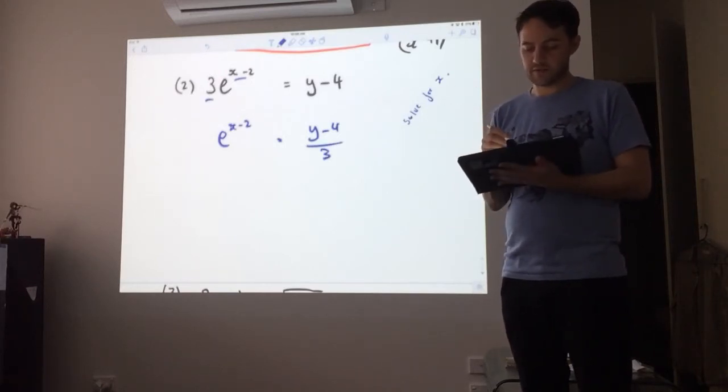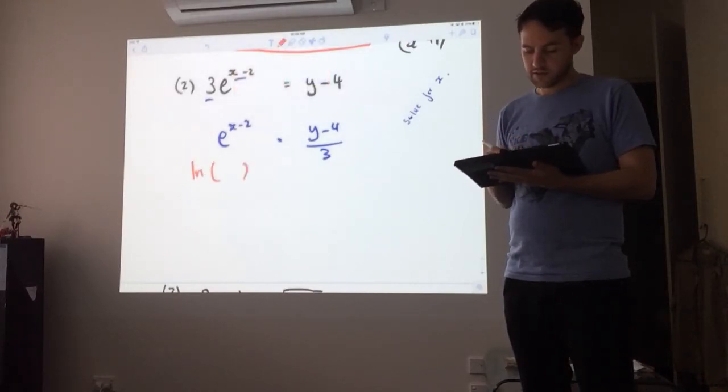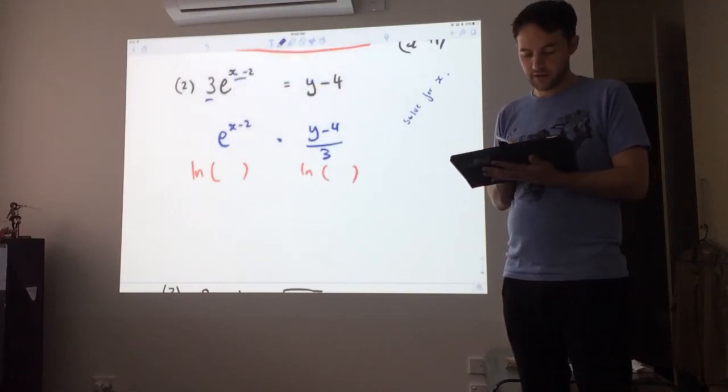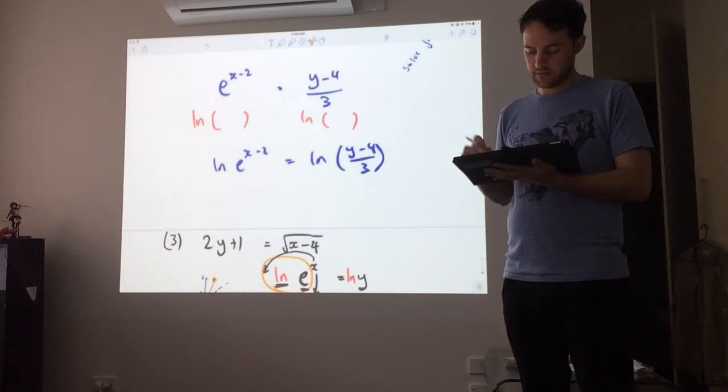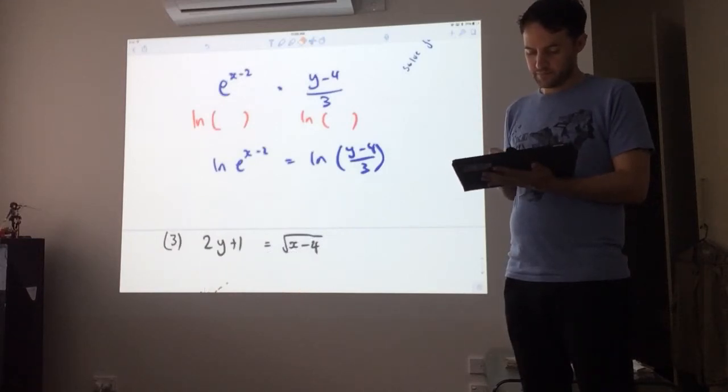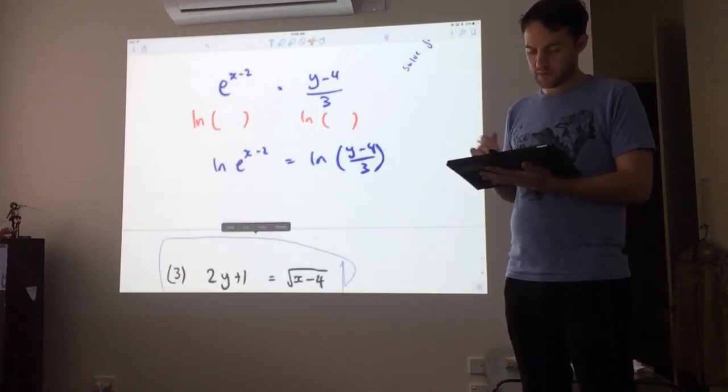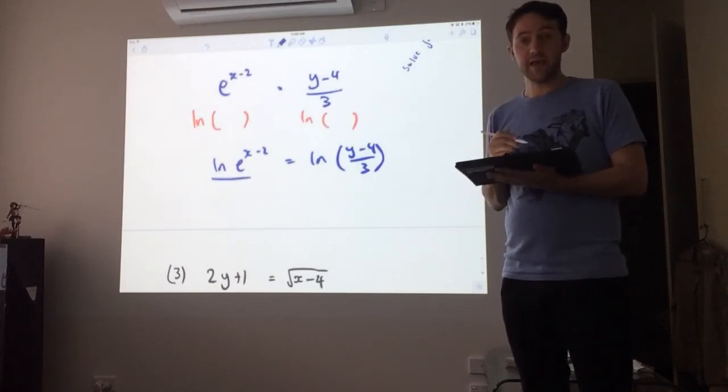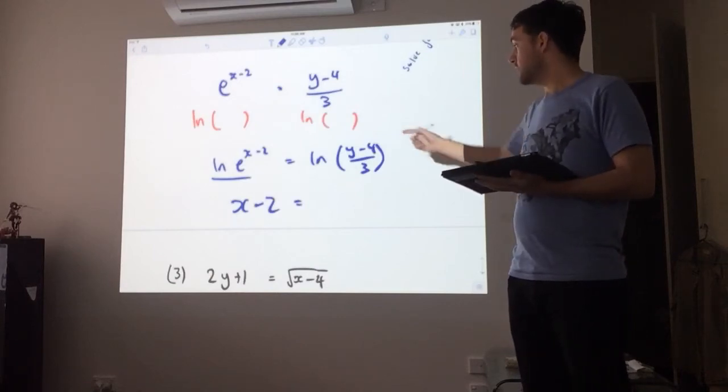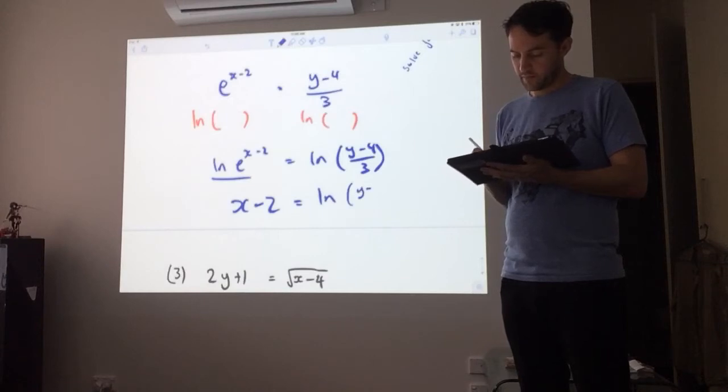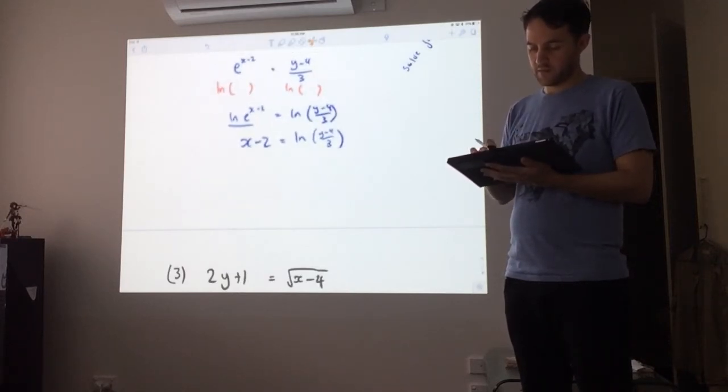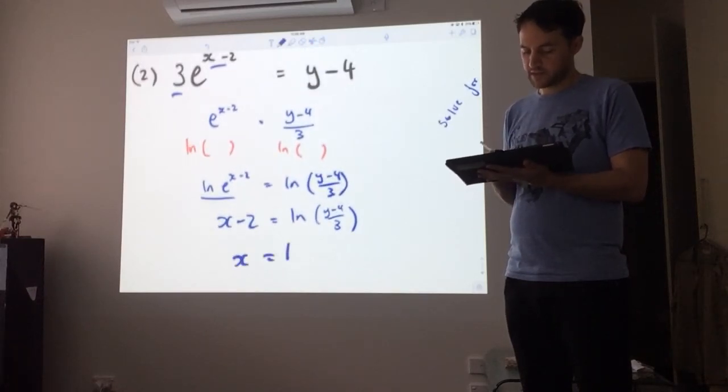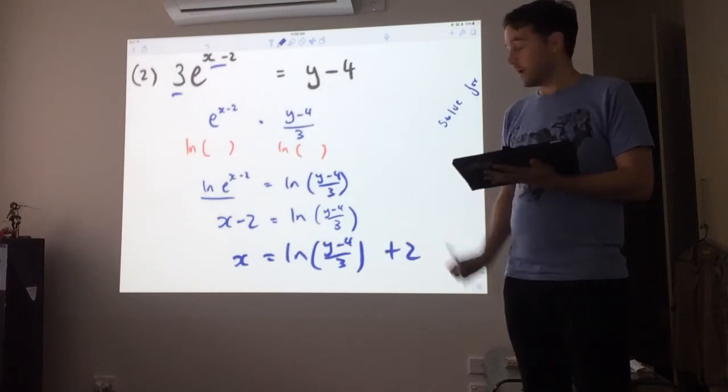So I have e to the x minus 2 equals y minus 4 on 3. Now, the next step I want to do is to cancel out the exponent. And so I do that by applying log to both sides. So it's log of everything has to be equal. So here I get log of e to the x minus 2 equals log of y minus 4 on 3. And with my log to e, this is going to cancel out. So I get x minus 2 equals, and then this stays the same. And then so the very last thing that I'm going to be doing is just adding 2. So x equals log of y minus 4 on 3 plus 2. So this is my final equation.